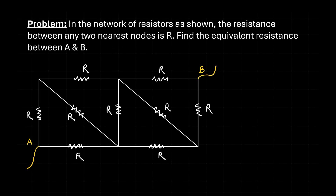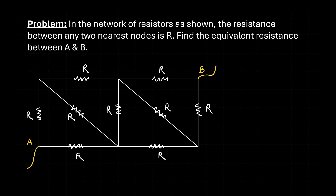This was the main network and we had to find the effective resistance between A and B. I named the points P, Q, R, and S, with A and B as the terminals. The resistor R is between A and P, between A and Q, and between P and Q. The mistake: there is no resistor between P and S — the correct connection is a resistor R between Q and R. That earlier diagram was wrong.